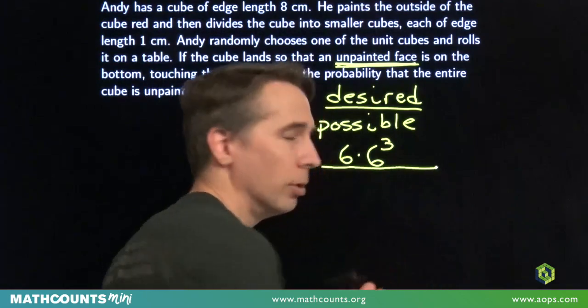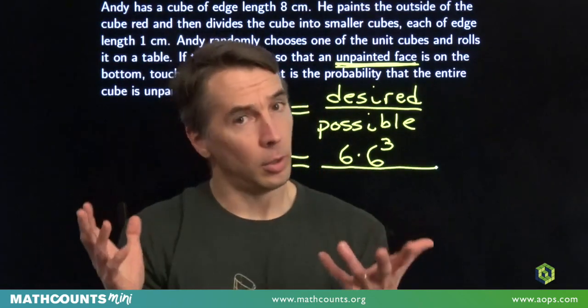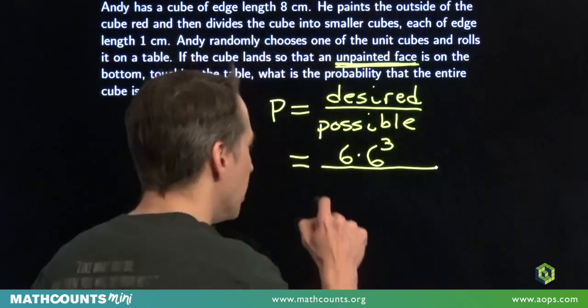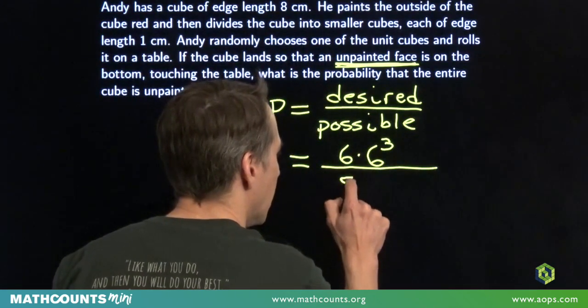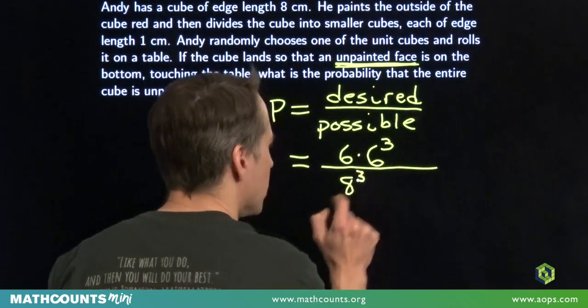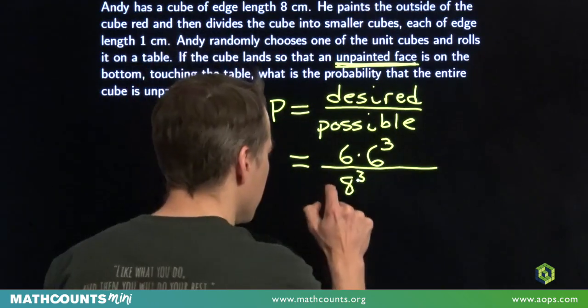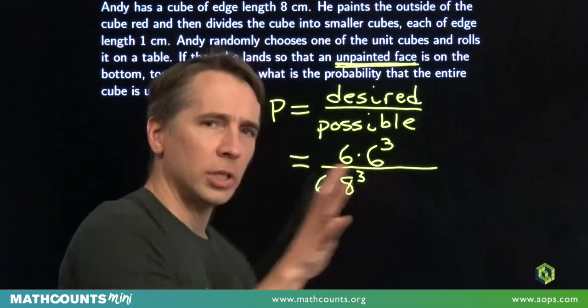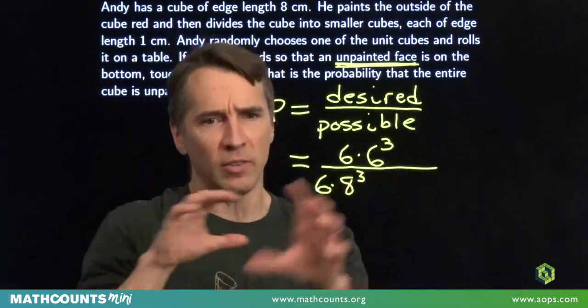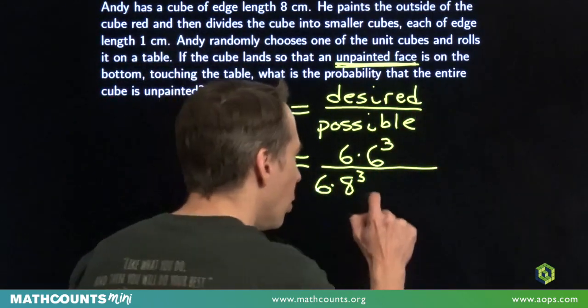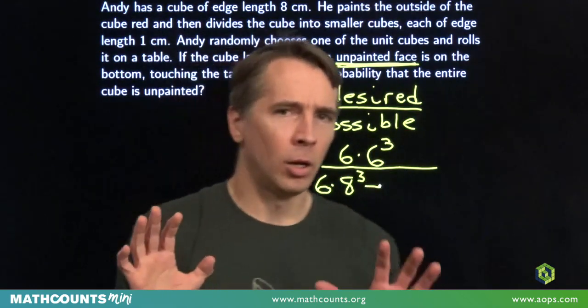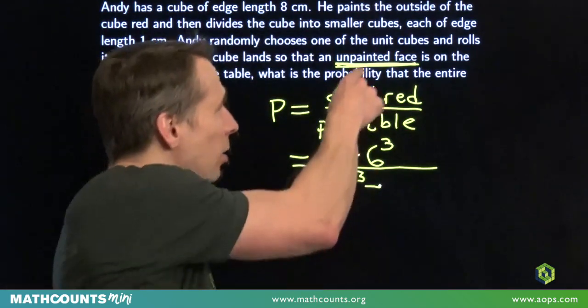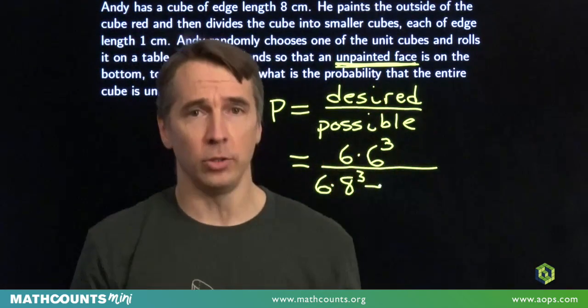Now for all the possible unit cubes. I'll say, okay, we start off all the possible unit cubes as all of them, all 8 cubed unit cubes, and each of those unit cubes has 6 faces. So in all of our unit cubes that we started with at the very beginning, we have 8 cubed unit cubes, each one has 6 faces. But then we need to take away all the painted faces, because what we're counting here again is the unpainted faces on all the unit cubes.